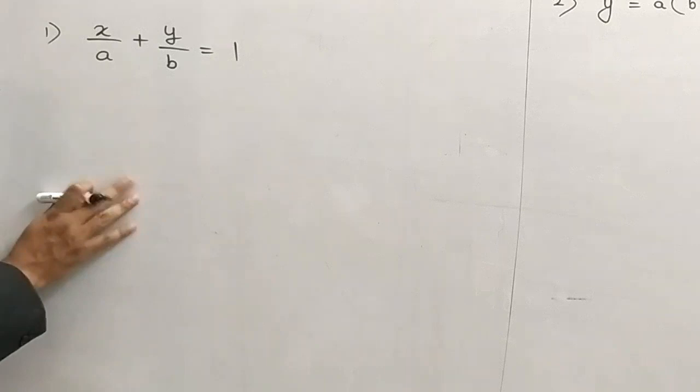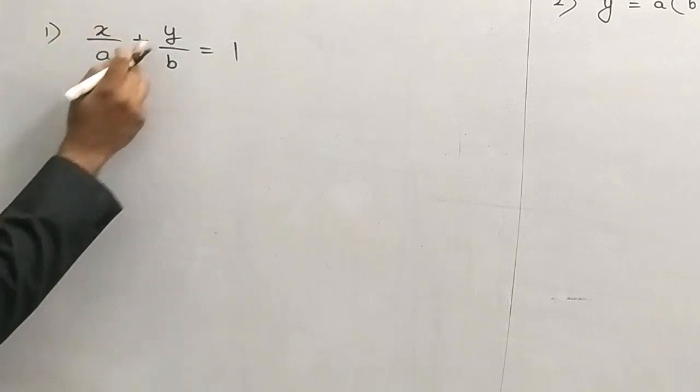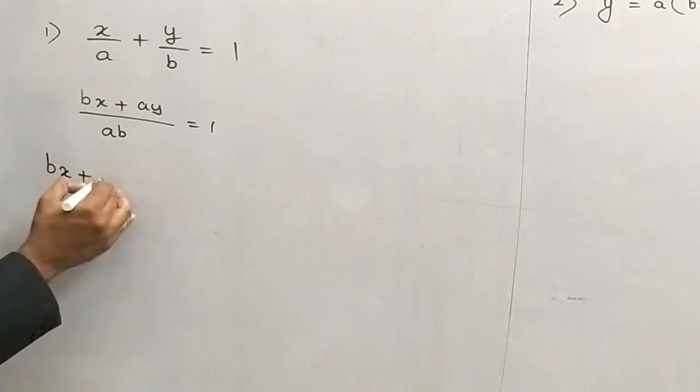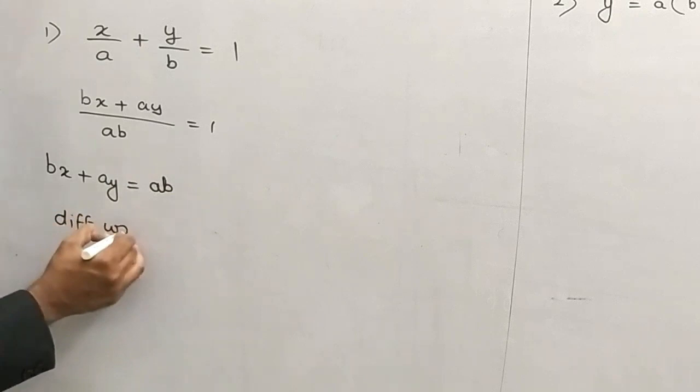Aapki marji — aap kaise bhi form karo. So let's take the derivative, but before that I would like to take the LCM. So it will be bx + ay = 1, meaning a × b, and here bx + ay is equal to ab. Now differentiate with respect to x.